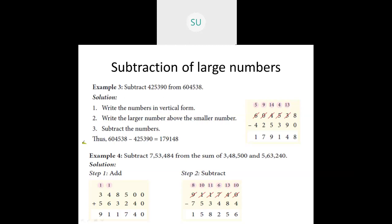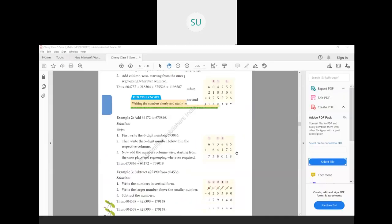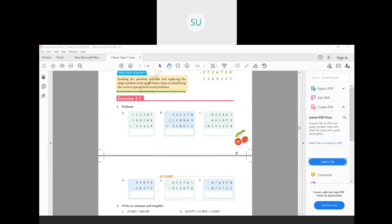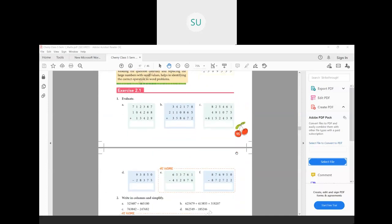So this is how you do addition and subtraction of large numbers. Now we will solve a few problems from exercise 2.1 on page number 95 in your textbooks. The numbers are already arranged in vertical form, so we will start adding from the ones.